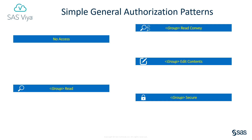The five most common general authorization patterns are: no access, group read, group read convey, group edit contents, and group secure. Typically, the group you would choose for the group read pattern would be a higher level group in the group hierarchy, perhaps a division or a region group such as All Gelcore or All North America. The groups used in the other patterns would typically be middle or lower level groups, perhaps a line of business group such as HR or sales, or even smaller groups such as a team or a project group. The no access authorization pattern is the default.